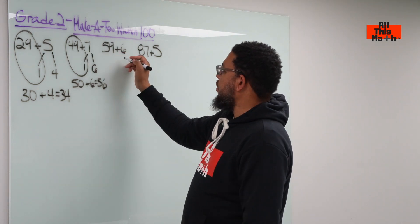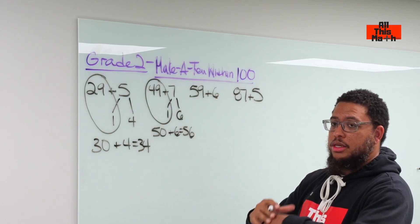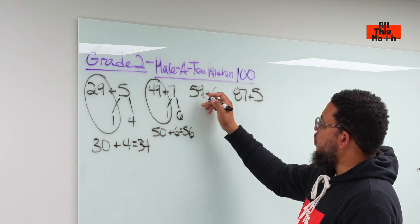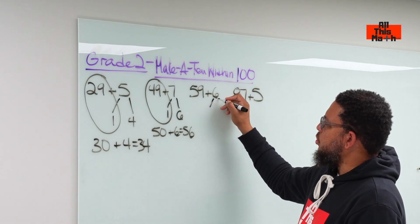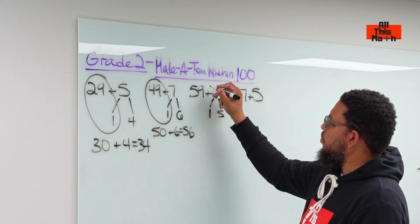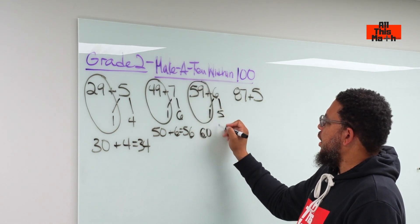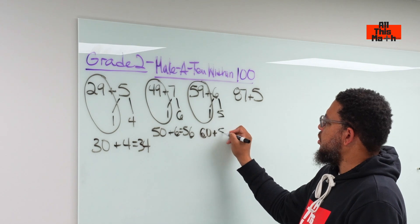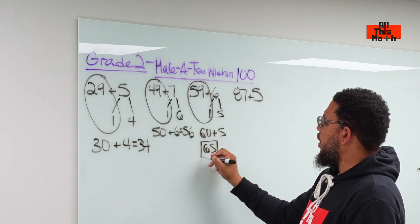So then we have 59 plus 6. Again, another two-digit number that ends in 9. We need to add 1 to this to make it into a multiple of 10. So we want to make this 59 into a 60. But where are we going to get the 1 from that we need to add to it? We're going to break the 6 down and make it become 1 and 5. So 1 plus 5. So we got 59 and 1, which is 60. And then we bring the 5 down. So 60 plus 5 is going to be 65.